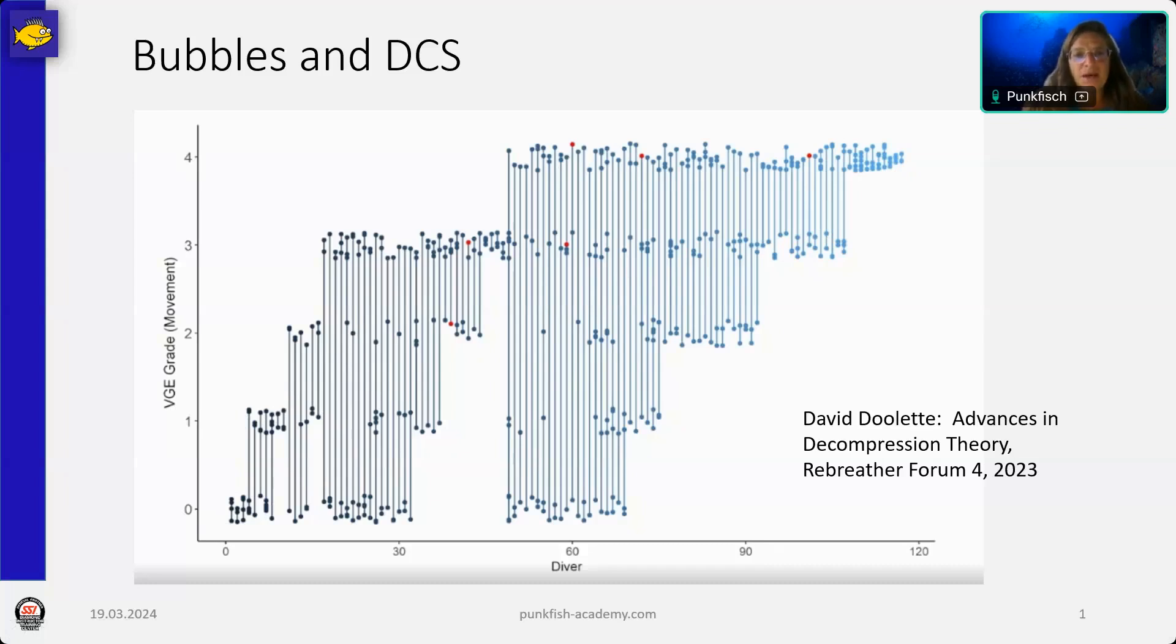What does this mean? It means that we cannot say that after a certain dive profile, you will have a certain amount of bubbles. The relation between bubbles and a certain dive profile is rather chaotic. The same dive profile can provoke everything between no bubbles and lots of bubbles in different persons. And the same dive profile can even provoke everything between no bubbles and lots of bubbles in the same person on different days.